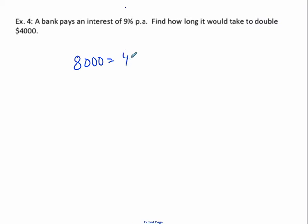So let's set up this equation. 8000 equals 4000 times 1 plus 9 over 100 to the power of n, where n is the number of years.